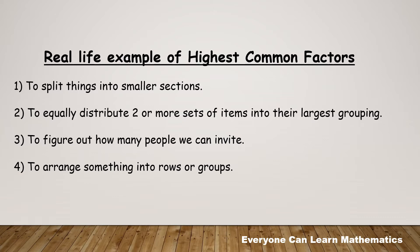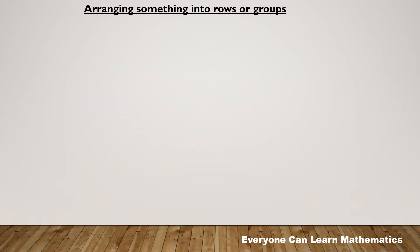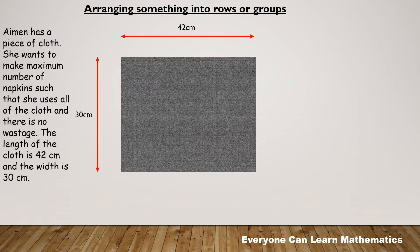Arranging something into rows or groups. In this example, Eamon has a piece of cloth. She wants to make maximum number of napkins such that she uses all of the cloth and there is no wastage. The length of the cloth is 42 centimeters and the width is 30 centimeters. Let's see if we can help Eamon.